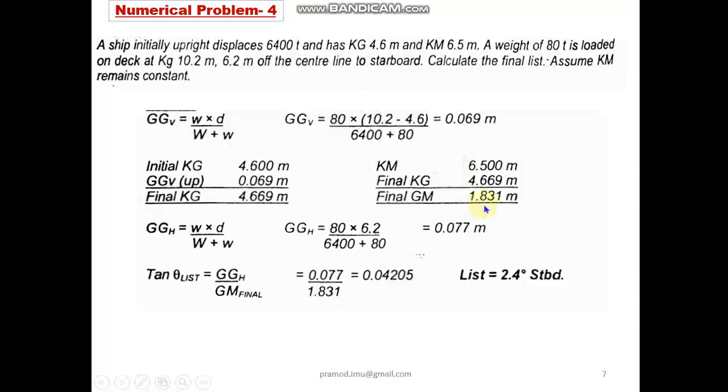Now if I come to the horizontal plane, the shift in center of gravity GGh is small w × d / the final displacement of the vessel. In this condition we have 80 × 6.2, that is the distance of the position where loading has happened, divided by the final displacement. So we will get 0.077 meters.